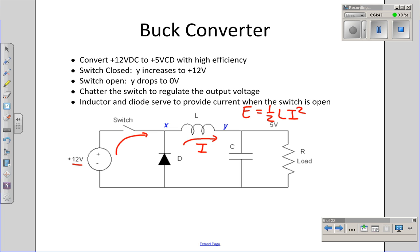By chattering the switch on and off, I can essentially cause the output to ripple up and down, turning the switch on and off, holding the output at whatever I want, say 5 volts, anything between 0 and 12.